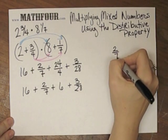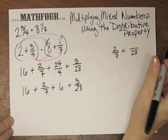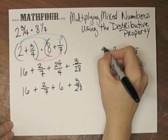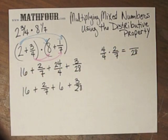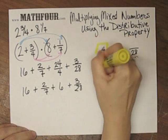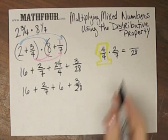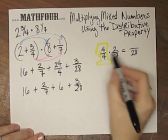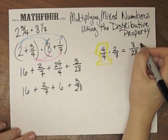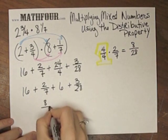2 sevenths is the same as what over 28? So here I can multiply by 4 over 4, which is in reality 1. So 4 times 7 is 28, and 2 times 4 is 8.